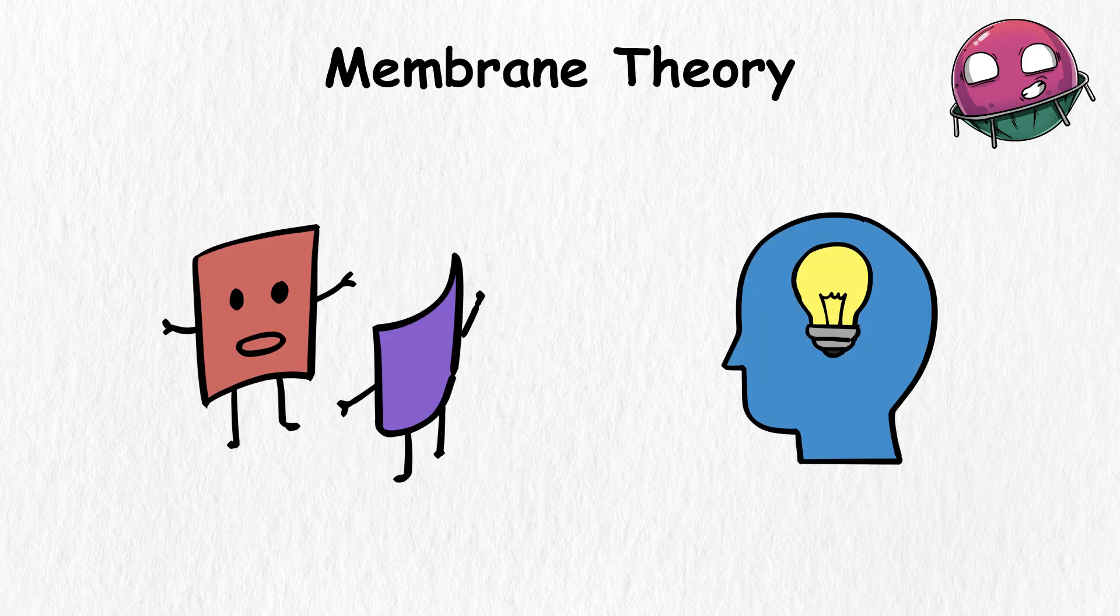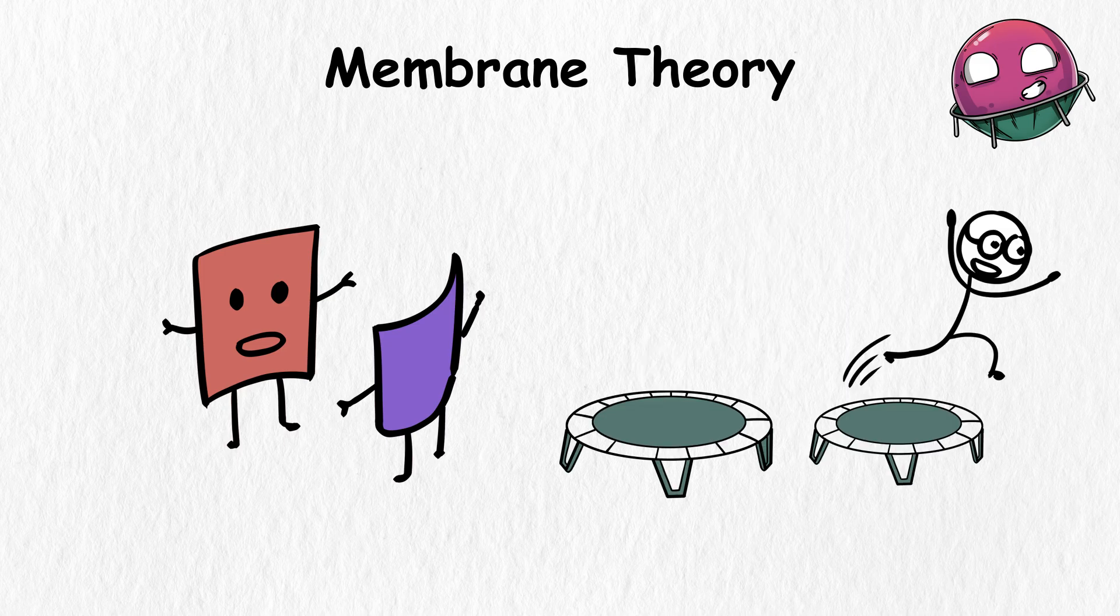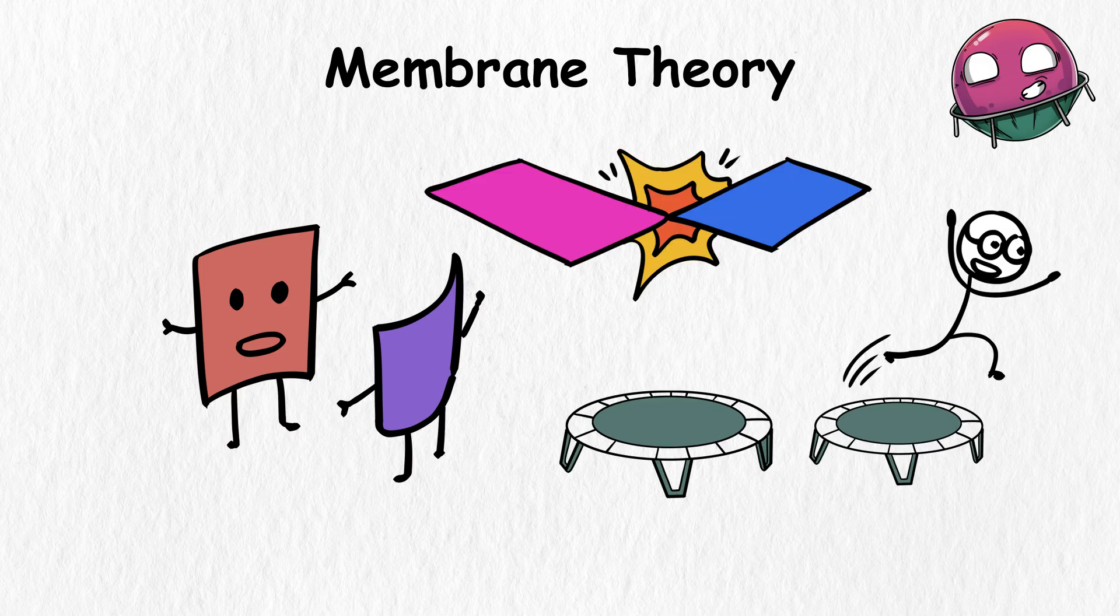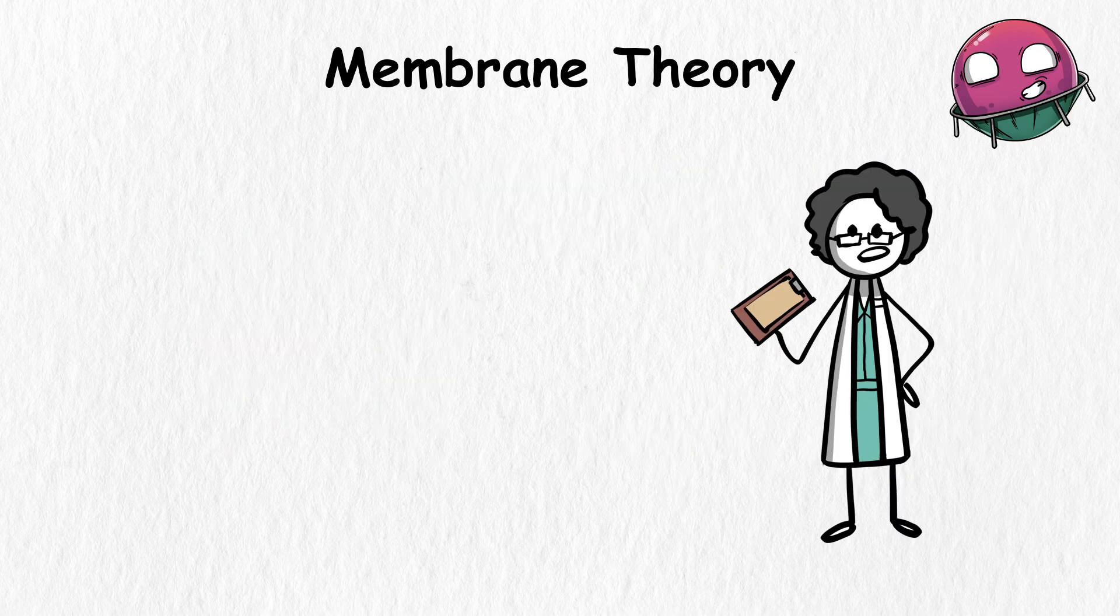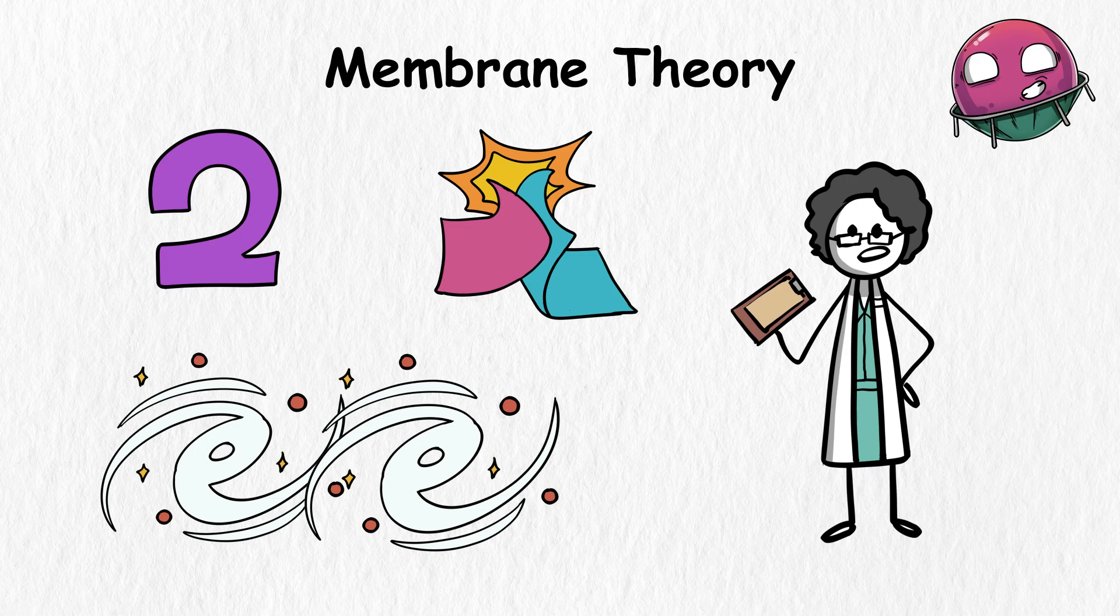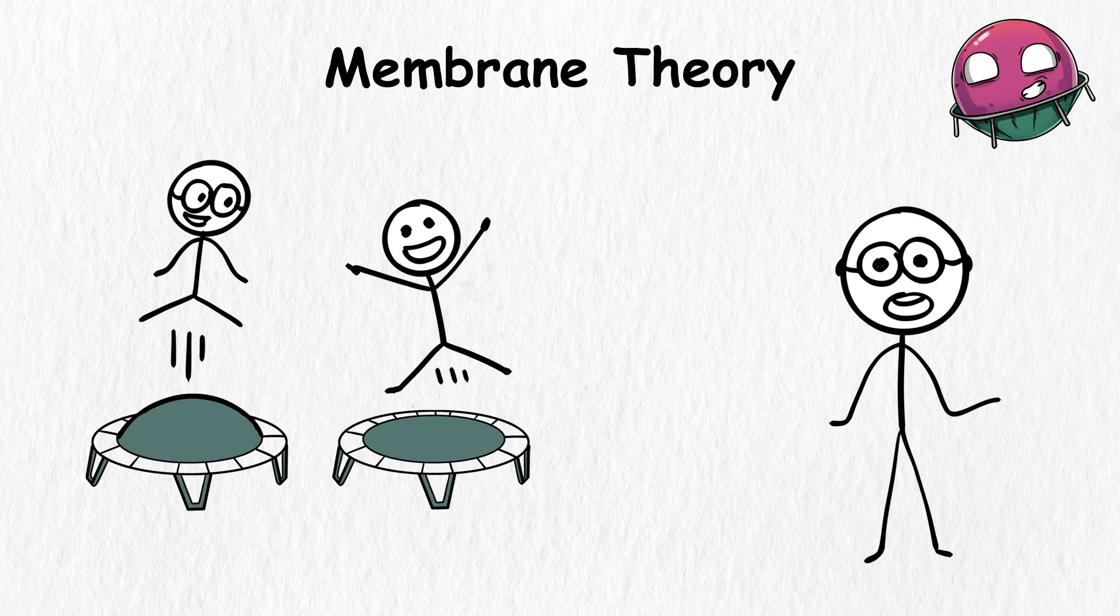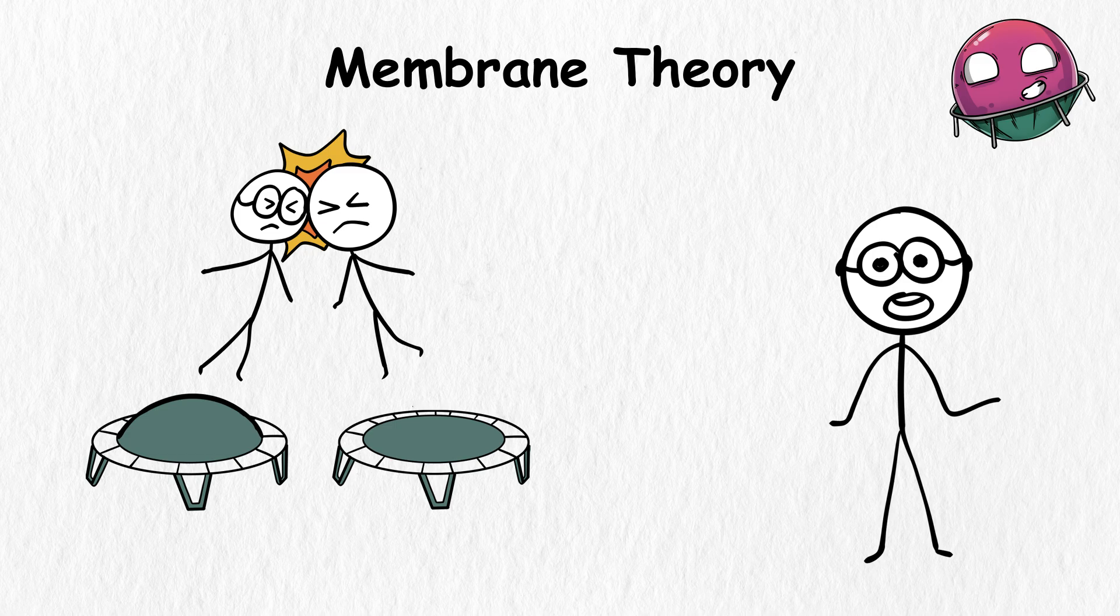According to this theory, these branes can even interact with each other, similar to how you can jump from one trampoline to another. But if two branes collide and interact, it could have an impact. Scientists think that a similar collision could have caused the Big Bang. Two different universes in the bulk likely collided and created the universe we live in. This is like how two people jumping on different trampolines can collide if they jump close to each other.